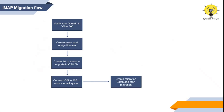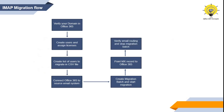Once the migration batch is synced, you will point the MX record to Office 365 so that emails start routing to Office 365. Once you verify that emails are getting routed to Office 365, you will complete the migration batch. And once the migration batch is completed, you can let your users know that they are now using Office 365 as a service. So this is the flow of IMAP migration.